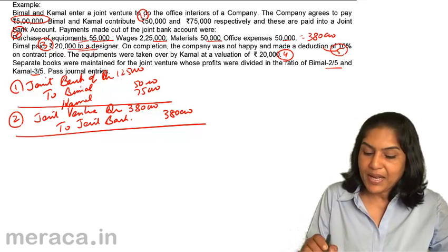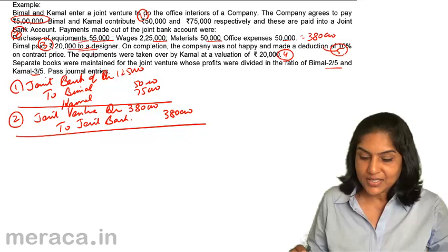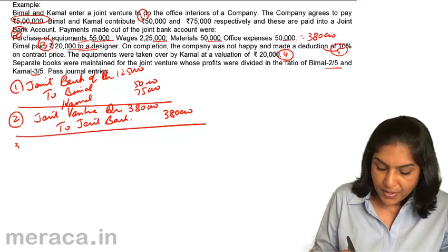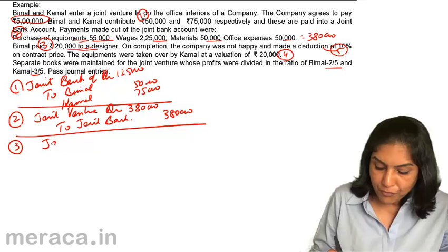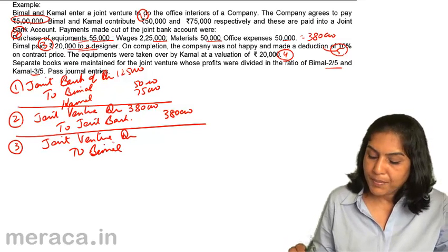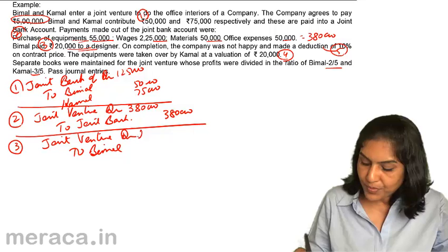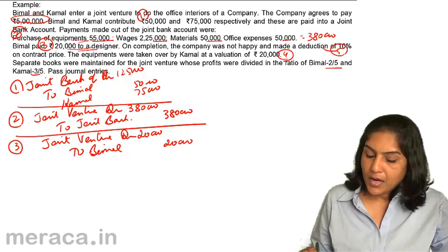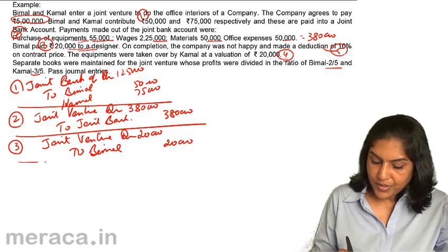Entry three: Bimal has paid 20,000 to a designer. This is a personal expense of Bimal, but it is an expense. Therefore, joint venture account debit to Bimal's account, amount 20,000.